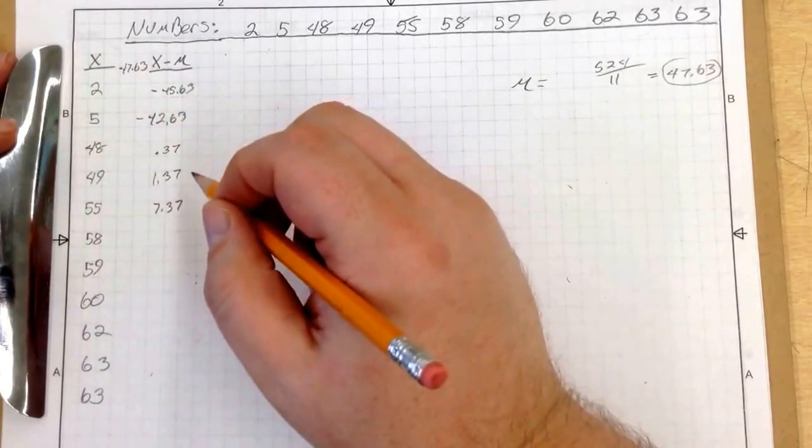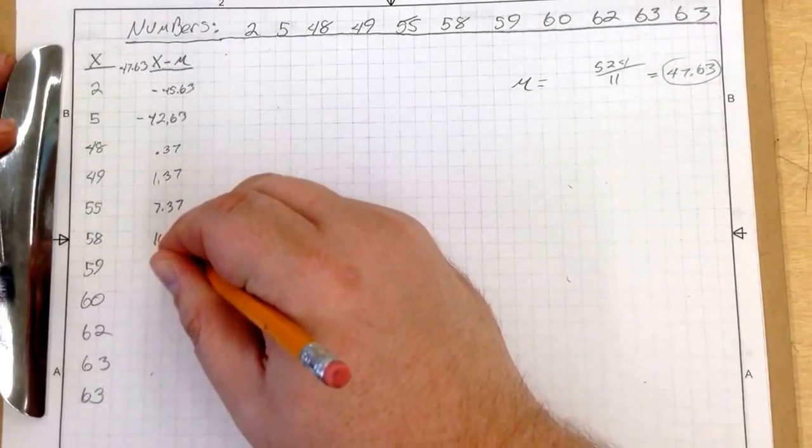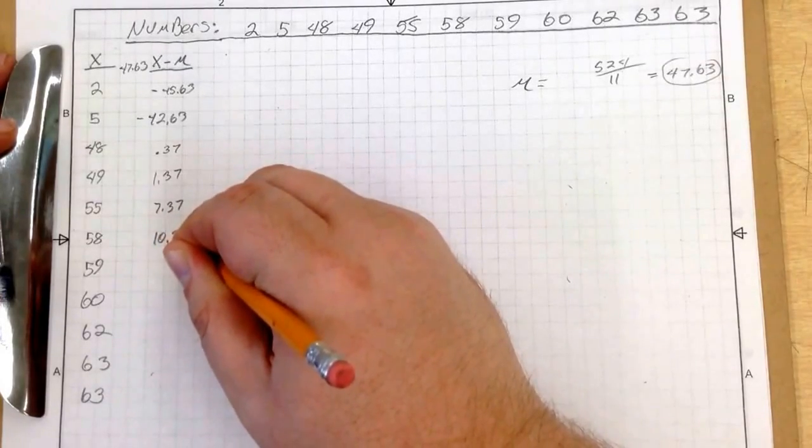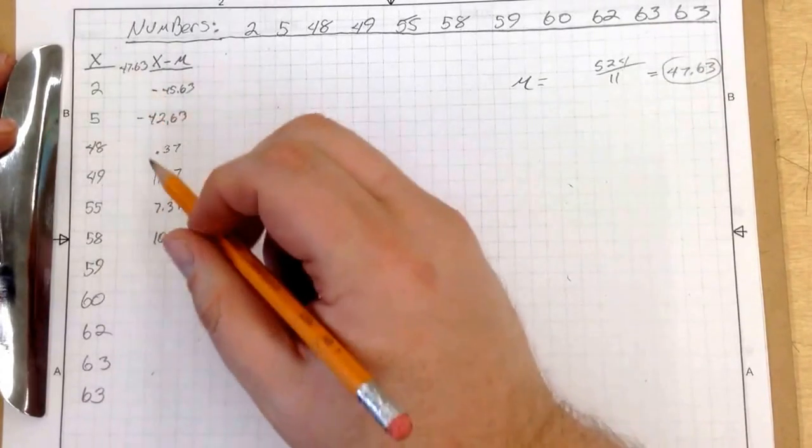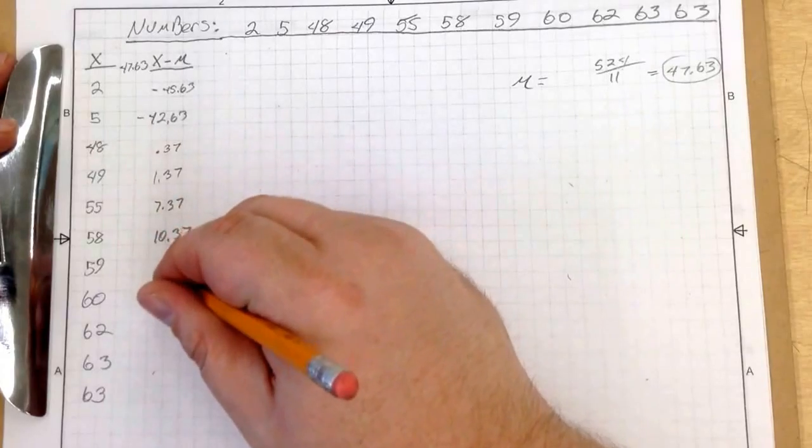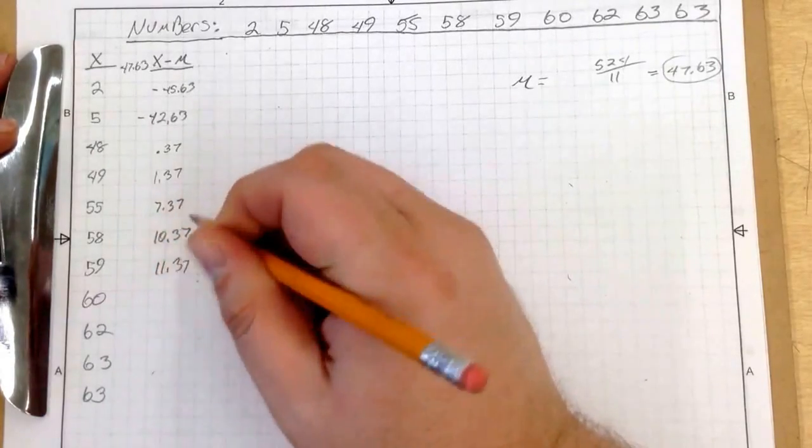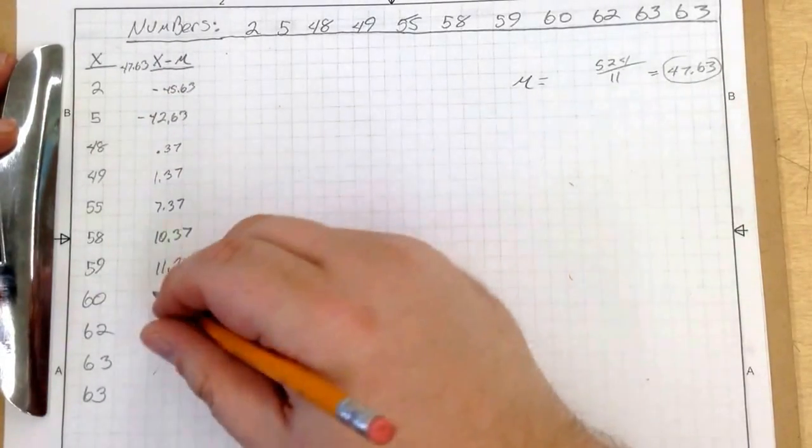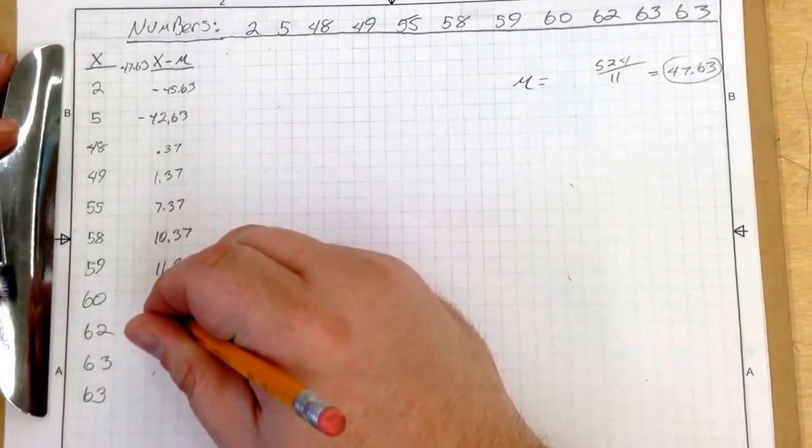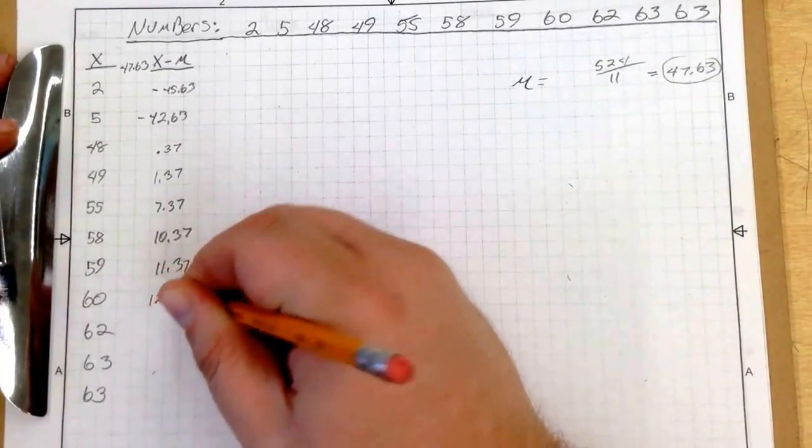55 minus 47.63 is 7.37. 58 minus 47.63 is 10.37. 59 minus 47.63 is 11.37.